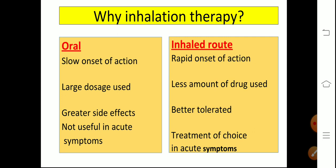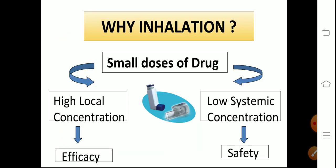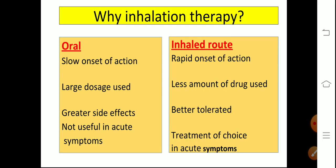Why the inhaled route? Because smaller doses are required when delivering the drug locally, and these small amounts attain high local concentration — so efficacy is more. Since small doses are given, the drug does not reach the systemic circulation in significant amounts, so systemic side effects are greatly reduced. The inhaled route has rapid action, uses less drug, is well-tolerated, and is the treatment of choice in acute symptoms.